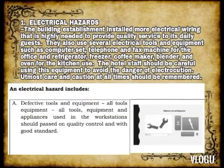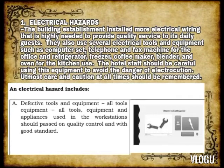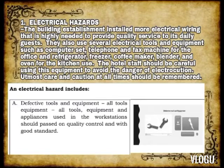Number 1: Electrical Hazards. Building establishments install more electrical wiring than is highly needed to provide quality service to daily guests. They also use several electrical tools and equipment such as computer sets, telephones, and fax machines for the office, and refrigerators, freezers, coffee makers, blenders, and ovens for kitchen use. Hotel staff should be careful using the equipment to avoid the danger of electrocution. Utmost care and caution at all times should be remembered.